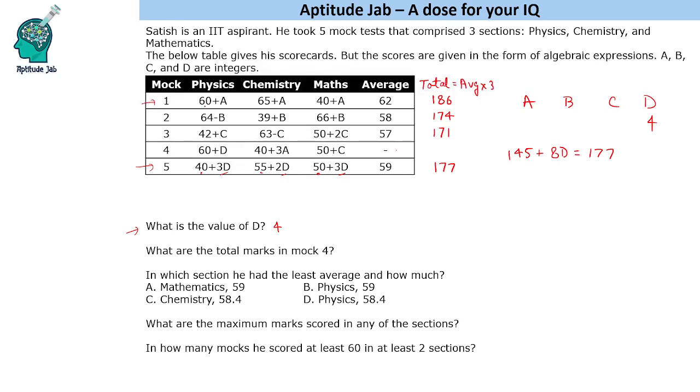Let us start finding other values A, B, C. 60, 65, 40, 100, 165. A is 3 times, total is 186. 3A will be 21. So A is 7.